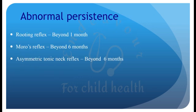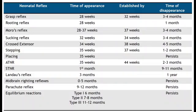Abnormal persistence of the Rooting reflex is beyond 1 month; of Moro is beyond 6 months; and of Asymmetric Tonic Neck Reflex is beyond 6 months. This is a very busy slide and you can study it in detail. Important questions have already been discussed in this PowerPoint.